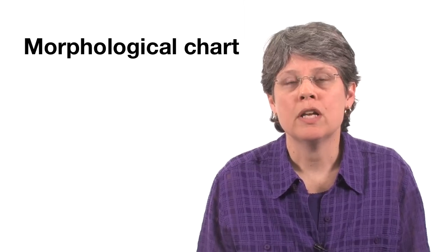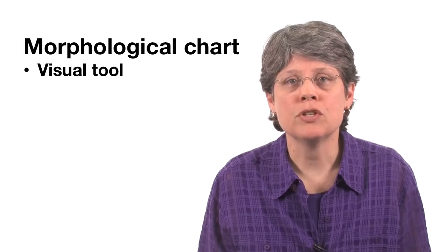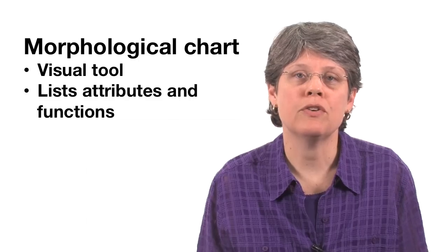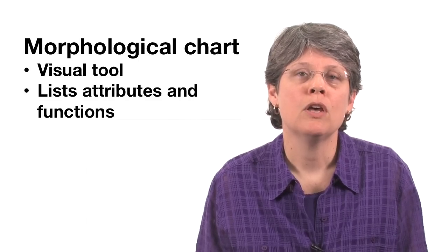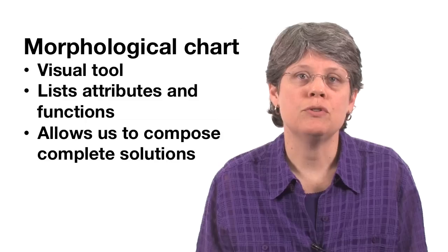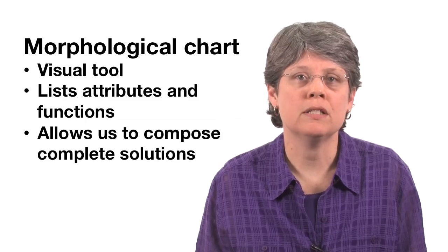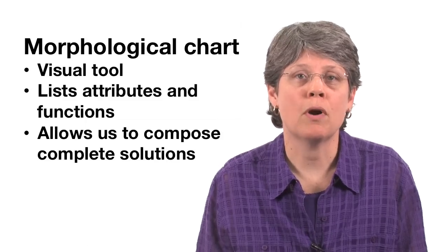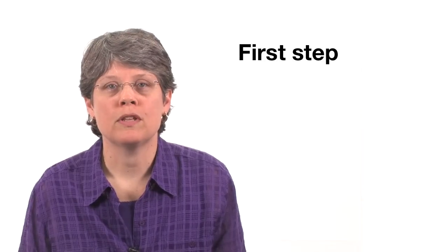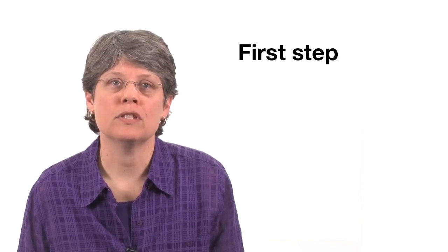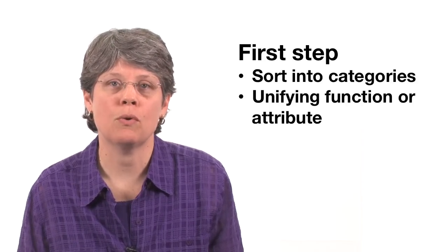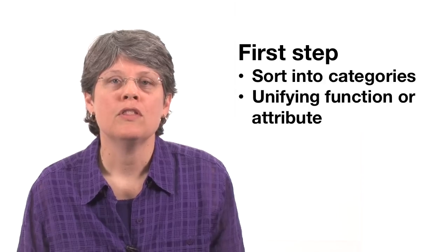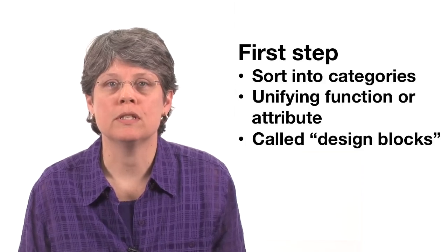A morph chart is a visual tool. It's essentially a table that lists different attributes and functions of your design. Using a morph chart allows you to compose complete design solutions from these partially formed ideas. You want to start by sorting these incomplete design solutions into categories that reflect a unifying function or attribute. These functions or attributes are known as design blocks.